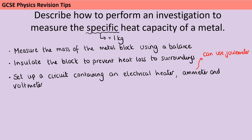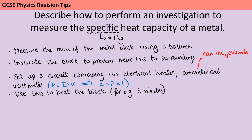What we do is take the power equation — power is current multiplied by potential difference — and that tells us how much energy is being transferred per second. So if we then time how long we're heating the block for, we can work out how much energy is transferred by doing E equals power times time. We're going to use our electrical heater to heat the block for a set amount of time, say five minutes, and that will allow us to use that power equation to work out how much energy has been transferred.